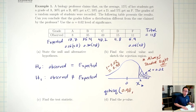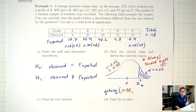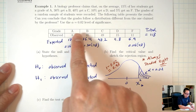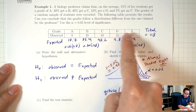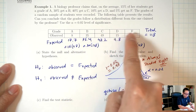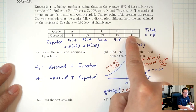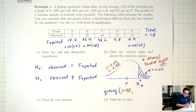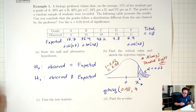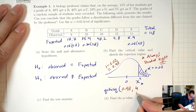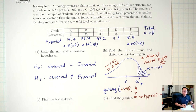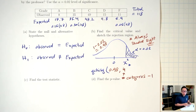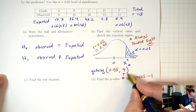The df for chi-square has nothing to do with sample size — it's one less than the number of categories. We have five categories: A, B, C, D, F. One less than five is four. So in R, we're going to do qchisq(0.98, 4).